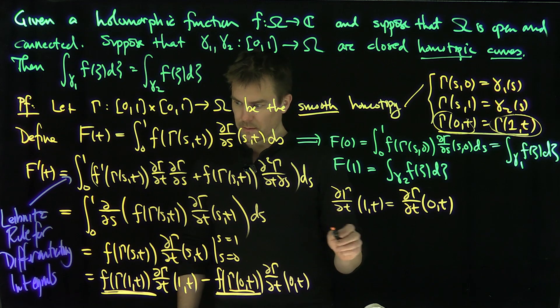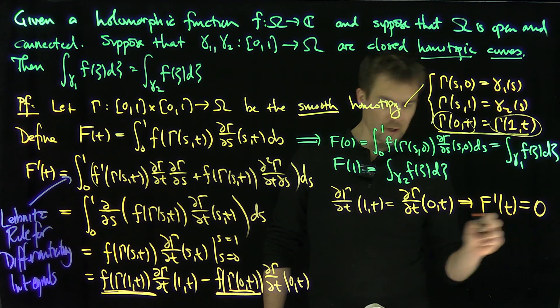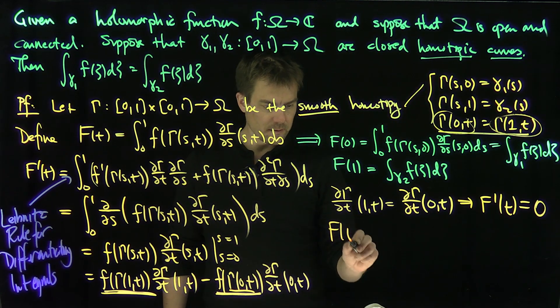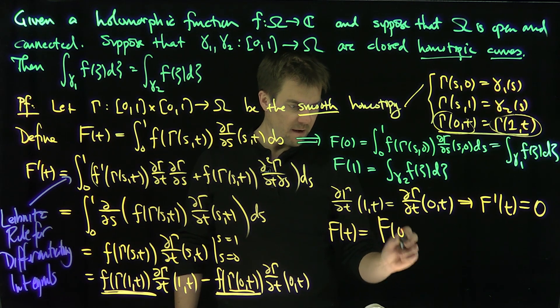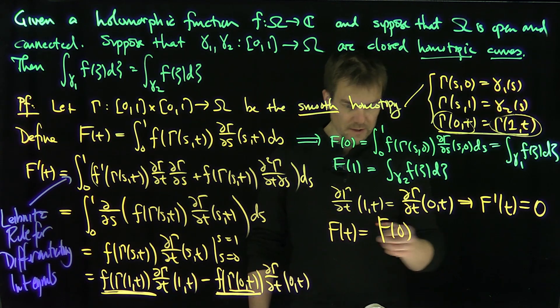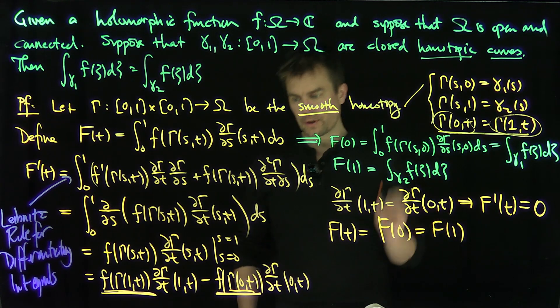And so this forces F prime of T is equal to 0. So F of T is a constant, F of 0. But since it's a constant, F of 0 is equal to F of 1. And that proves the Cauchy theorem.